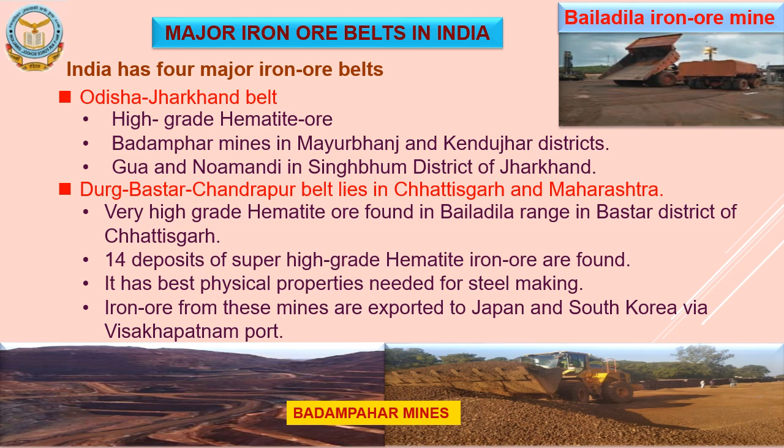There are four major iron ore belts in India. The first is the Odisha-Jharkhand belt. In Odisha, high-grade hematite ore is found in Badampahar mines in the Mayurbhanj and Kendujhar districts. In Jharkhand, Goa and Noamundi mines in Singhbhum district are the major deposits.